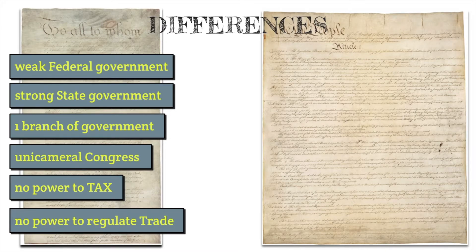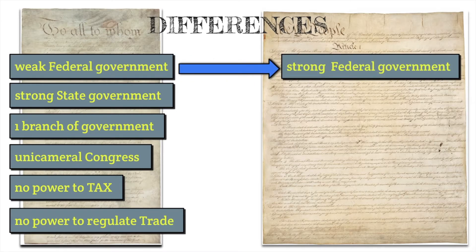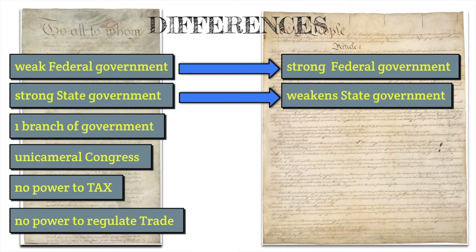Let's look at some significant differences between the Articles and the Constitution. Under the Articles of Confederation, we had a weak federal government. Under the Constitution, the powers of the federal government are going to increase significantly, creating a much stronger federal government. Under the Articles, there was an emphasis on strong state governments, but under the Constitution, state powers are going to be reduced a little bit more than some people wanted.